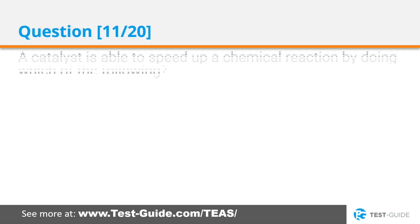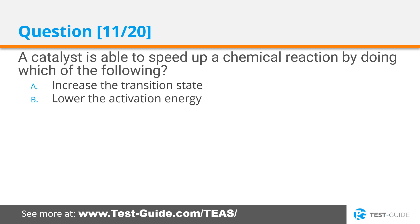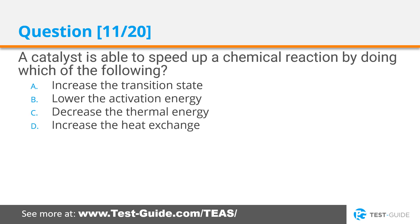Question 11. A catalyst is able to speed up a chemical reaction by doing which of the following? Increase the transition state, lower the activation energy, decrease the thermal energy, or increase the heat exchange.